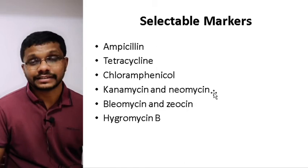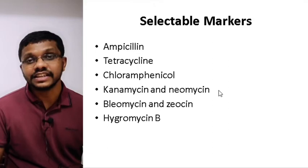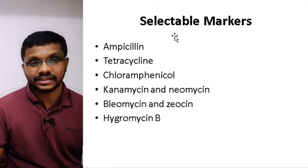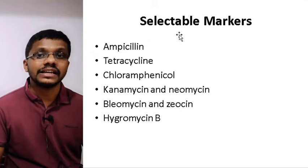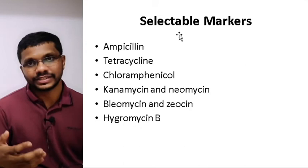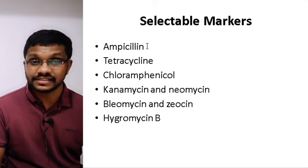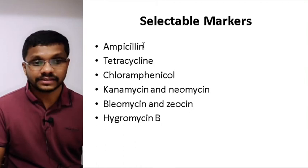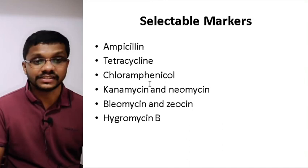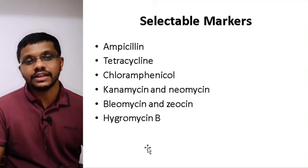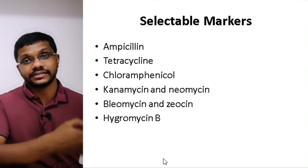This covers all the vectors used in bacteria, most of which are used in E. coli. From the next class onward we will talk about vectors used in yeast, plant cells, and animal cells. So far we have seen many vectors with different selectable markers, which are used to select bacteria that have taken up the DNA. Examples of selectable markers include ampicillin resistance gene, tetracycline resistance gene, chloramphenicol resistance gene, kanamycin and neomycin resistance genes, bleomycin and zeocin resistance genes, and hygromycin B resistance genes.